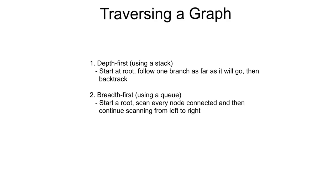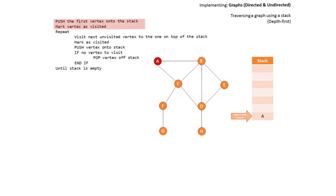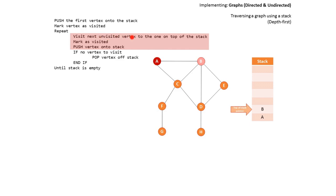Let's look at some examples of pseudocode to see how these actually work. Here's our graph, here's our pseudocode, and here's our empty stack. Remember, a stack is a last-in, first-out data structure — we push items onto the top of the stack and pop them off. The first thing we do is push the first vertex onto the stack and mark it as visited. We then visit the next unvisited vertex connected to the one on top of the stack — that's B — and we mark it as visited and push it onto the stack.